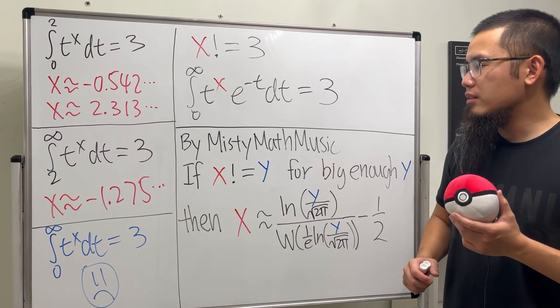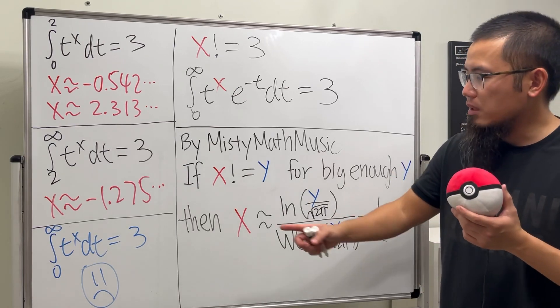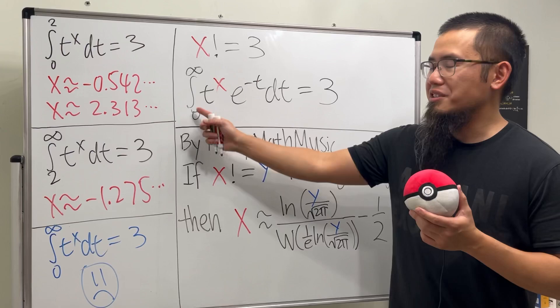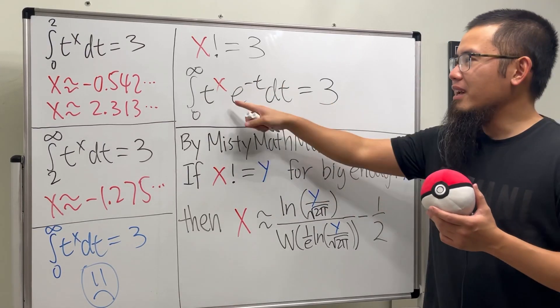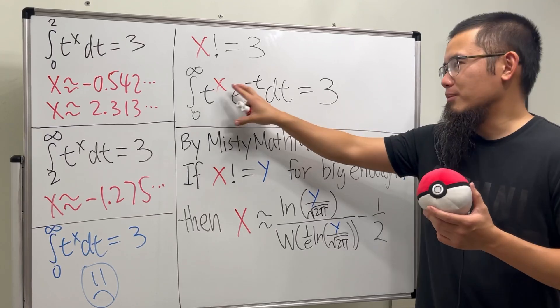But how can we actually end up with the negative solutions? Because remember, x factorial is actually just this integral. Suppose we want to make this equal to 3, there are negative x values that can actually make this true.